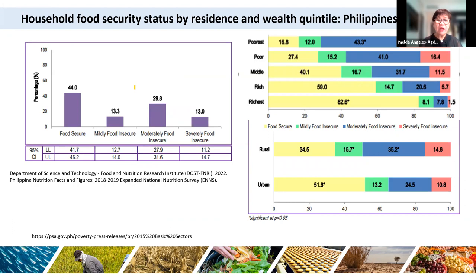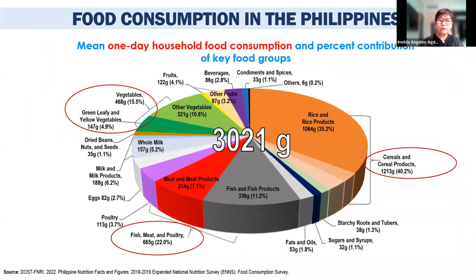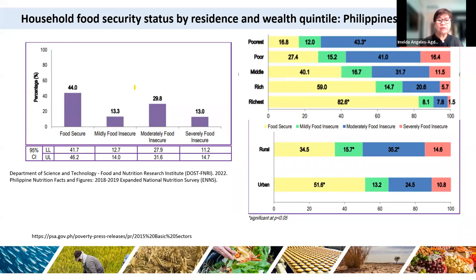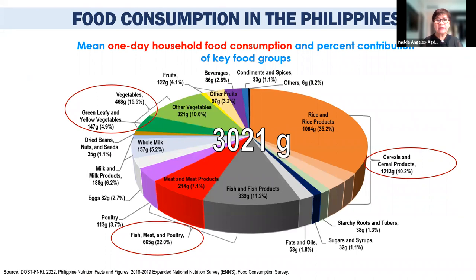In the household food security survey by residence and wealth quintile, food-secure households in 2022 comprised about 44 percent. The severely food insecure represent about 13 percent of households. The poorest population are the most food insecure and are found predominantly in rural areas.